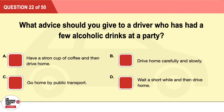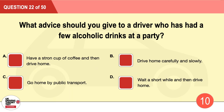Question 22: What advice should you give to a driver who has had a few alcoholic drinks at a party? A: Have a strong cup of coffee and then drive home. B: Drive home carefully and slowly. C: Go home by public transport. D: Wait a short while and then drive home. The correct answer is C: go home by public transport.